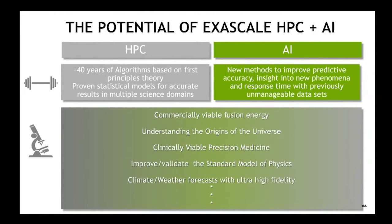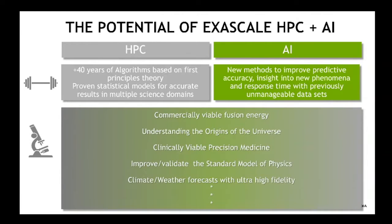If we couple HPC and AI together, I think we have a really powerful set of tools to tackle some of the big problems in science — understanding the standard model, developing commercially viable fusion energy, understanding the origins of the universe. These are the grand challenges of science. Even if Dennard Scaling didn't end, you would still want to see the application of artificial intelligence. In some ways, this may actually be a good thing — creating an opportunity to do things that as a community we might not otherwise do if we could still write inefficient code and get 2x performance every two or three years.